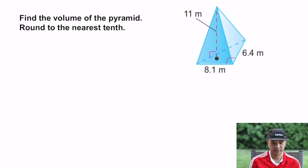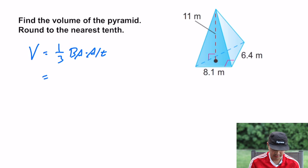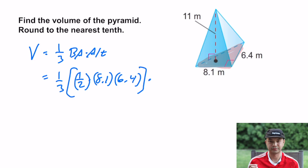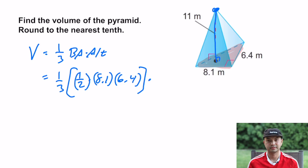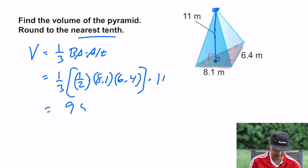Here we have a triangular pyramid. The volume of this pyramid is one third base area times the altitude. The base is this triangle, which has an area of one half times 8.1 times 6.4. Then multiply by the altitude — from the tip down perpendicular to the base — which is 11. Multiplying it out gives 95.04, and rounding to the nearest tenth that's 95.0 meters cubed.